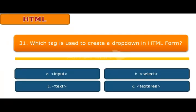Question number 31: Which tag is used to create a dropdown in HTML form? Options are A input, B select, C text, D text area. The answer is select. Select is used to create a dropdown in HTML form.